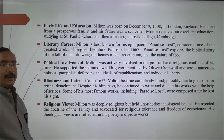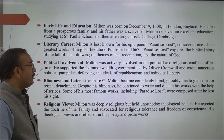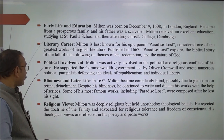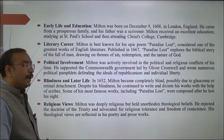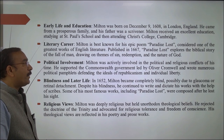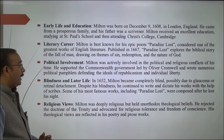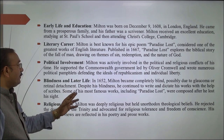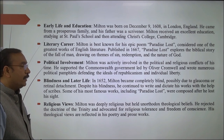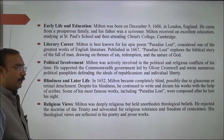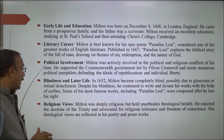Published in 1667, Paradise Lost explores the biblical story of the fall of man, drawing on themes of sin, redemption, and the nature of God. Milton was actively involved in the political and religious conflicts of his time. He supported the Commonwealth Government led by Oliver Cromwell and wrote numerous political pamphlets defending the ideals of republicanism and individual liberty. In 1652, Milton became completely blind, possibly due to glaucoma or retinal detachment. Despite his blindness, he continued to write and dictate his works with the help of scribes.